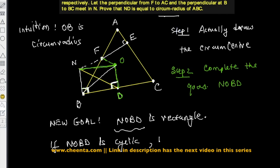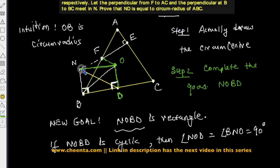If NOBD is cyclic, then angles NOD and BNO will both be 90 degrees, because their opposite angles are 90 degrees and opposite angles of a cyclic quadrilateral add up to 180 degrees. So the question becomes: how do we show that NOBD is cyclic?